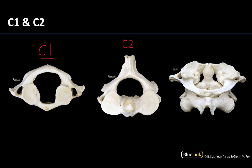C1 carrying the cranium rotates on C2, allowing the head-shaking motion you get when you shake your head no. The dens projects superiorly from the body of C2 and serves as the pivot about which C1 — and with it the head — rotates.